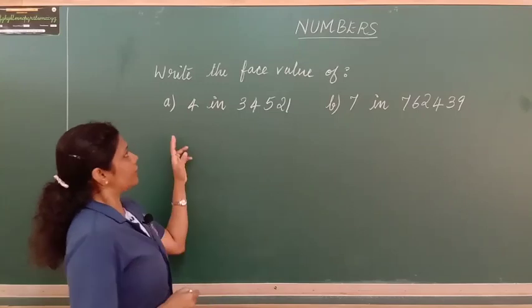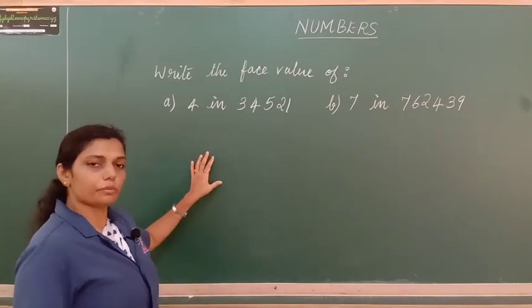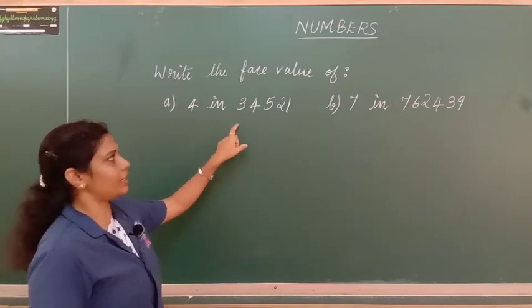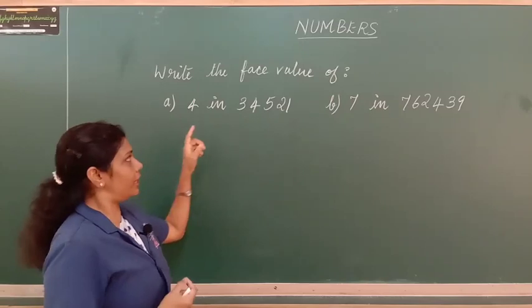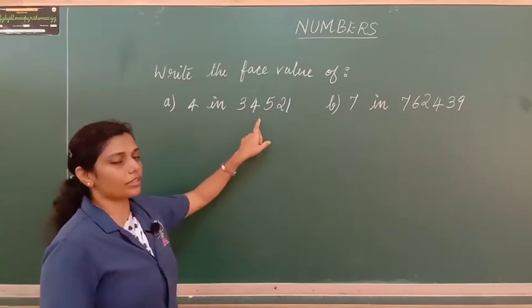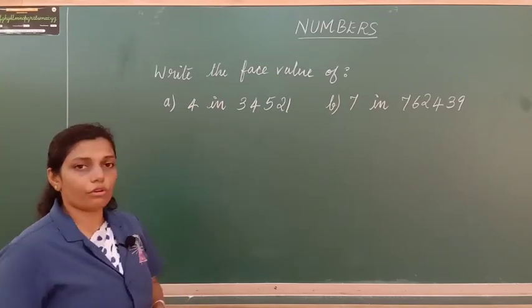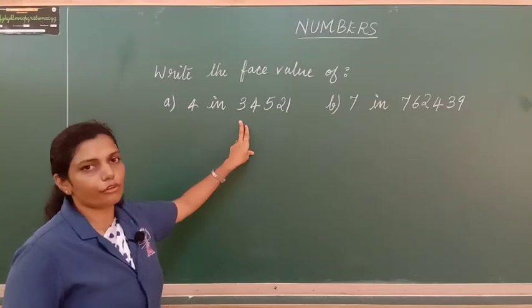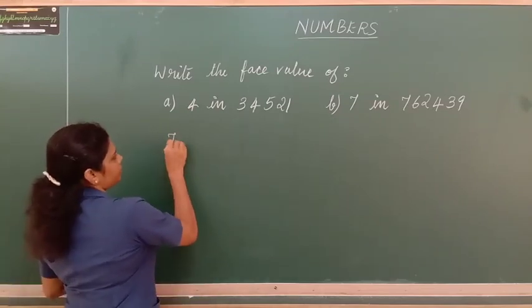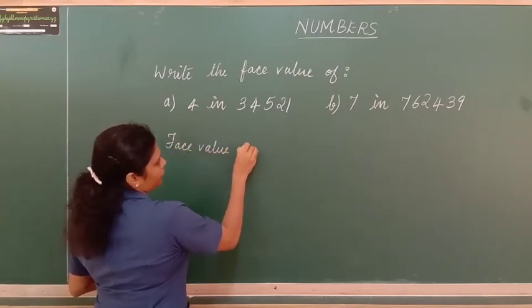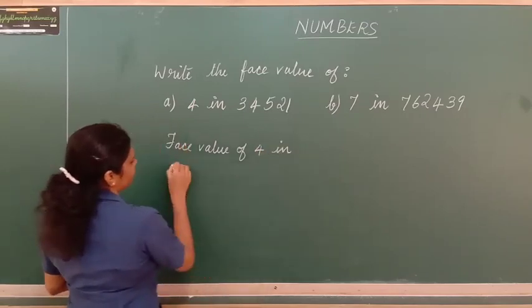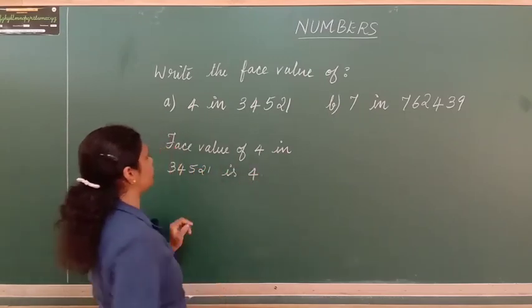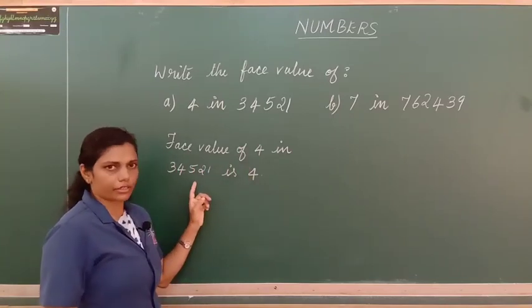Now the second problem: write the face value. We have two problems, A and B. In problem A, we have to write the face value of 4 in 34,521. As we know, face value is nothing but the digit itself, so the face value of 4 in this number is 4.